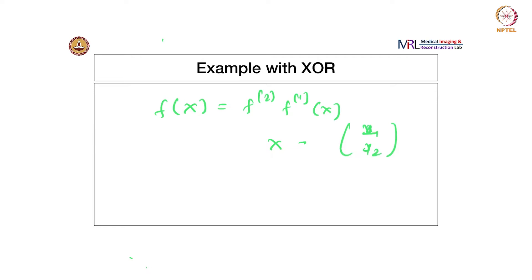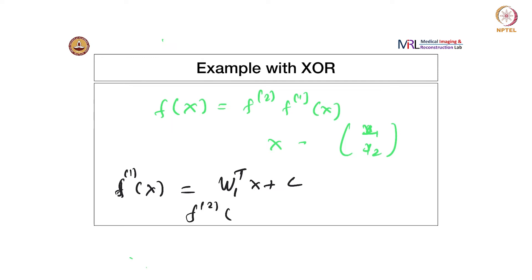For each layer: F1 of X is the input layer — it is basically W1 transpose X plus some bias term. And F2 of X would be W2 transpose H.